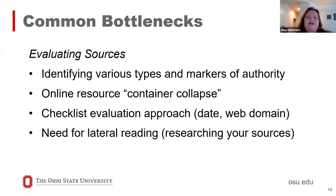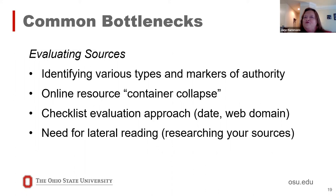Evaluating sources is another bottleneck — identifying various types of authority, what makes people authorities, what gives them authority, and what are the markers of authority when looking at a particular information source. I see this a lot with students: having them look at a PDF of a journal article and asking what we know about the author based on this, what journal is this from — and a lot of times they struggle even to pull out the journal title. They don't really know where to look for that information in an article.